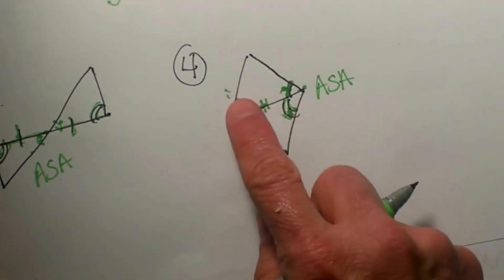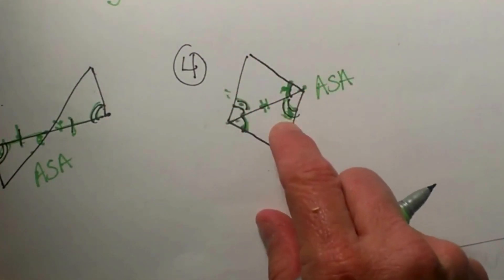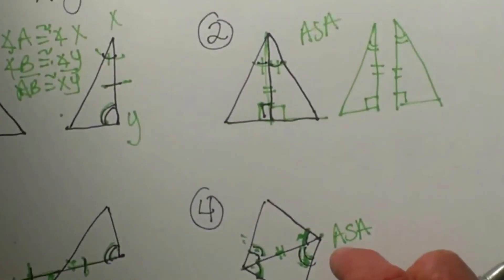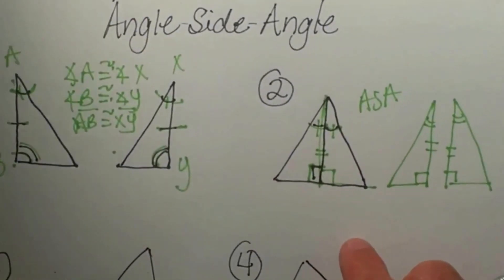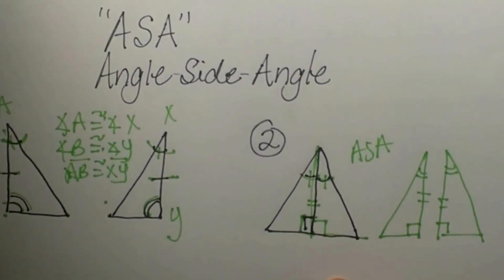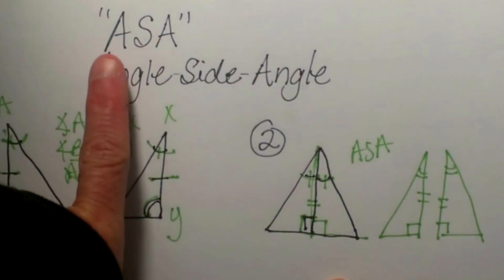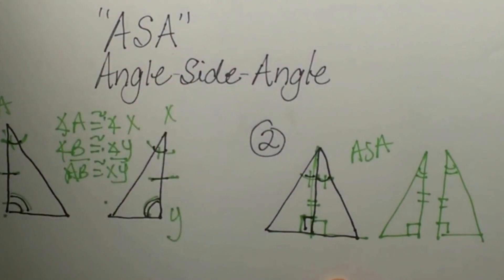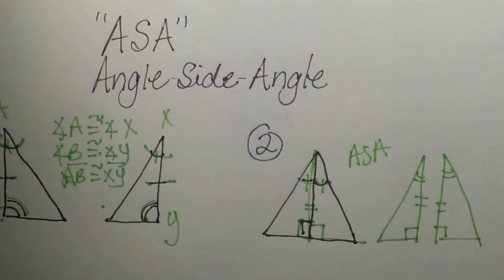So again, you are looking for two angles and an included side to identify your corresponding parts. That is how you would identify if you are going to use an angle side angle approach to prove the triangles are congruent.